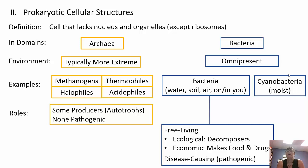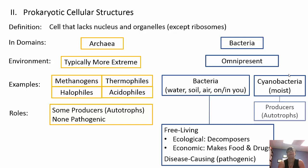Bacteria are everywhere. Cyanobacteria are photosynthetic bacteria that live in moist environments. Some bacteria are normal flora — they live on and in us. Archaea can be producers or autotrophs, but none are pathogenic, so none cause disease. Bacteria, on the other hand, do cause diseases, but they are also decomposers and can make food and some drugs. Cyanobacteria are producers — autotrophs that make their own food.